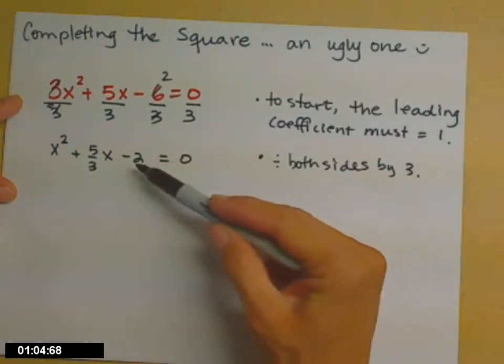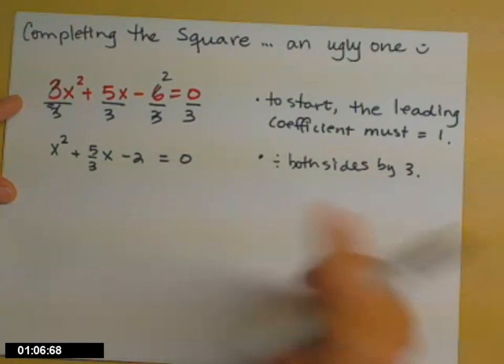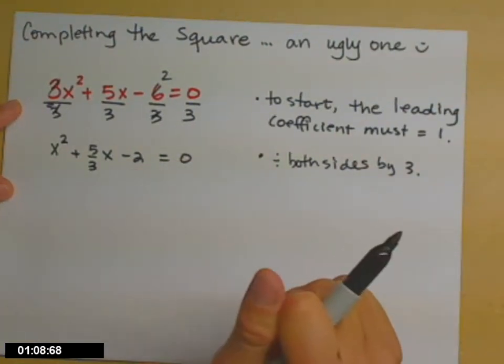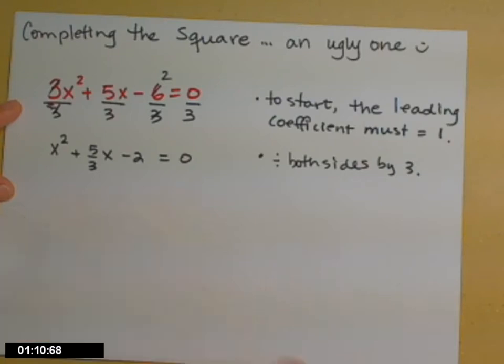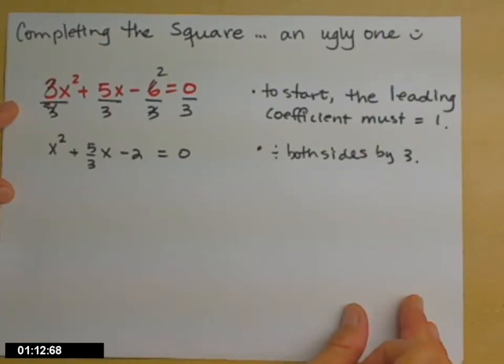So then the technique we're using is we're going to move our constant term over to the right, leave the space open to put our new constant term in so that we can get a perfect square trinomial on the left-hand side.